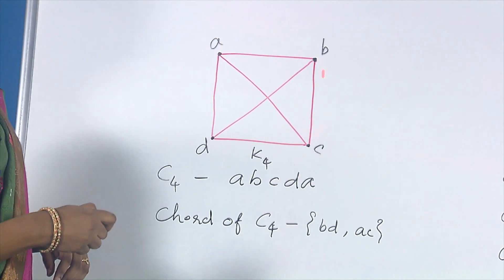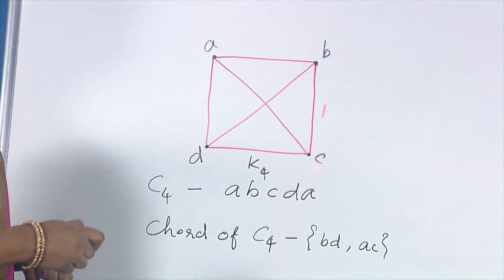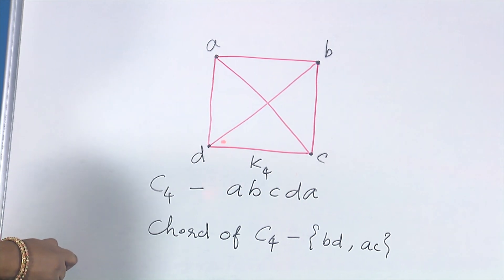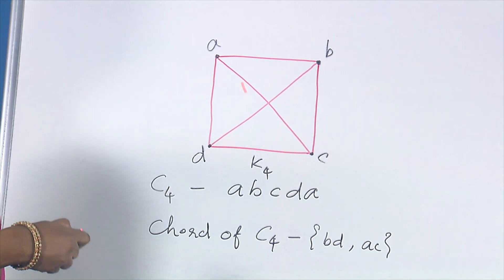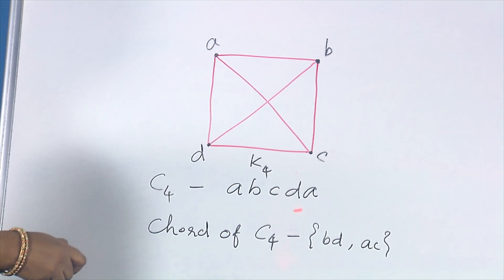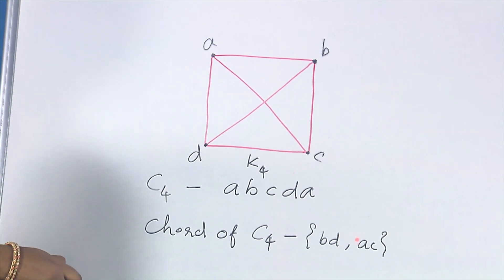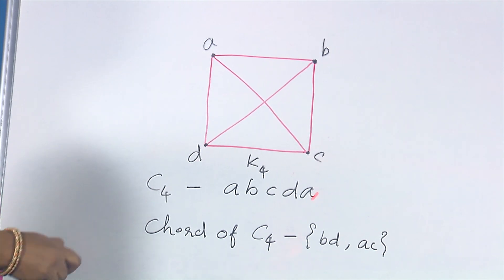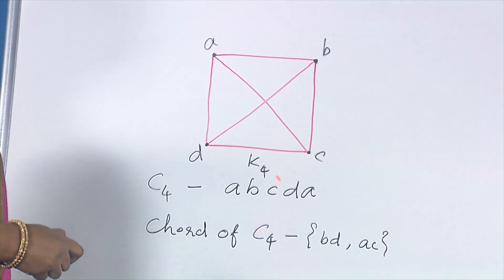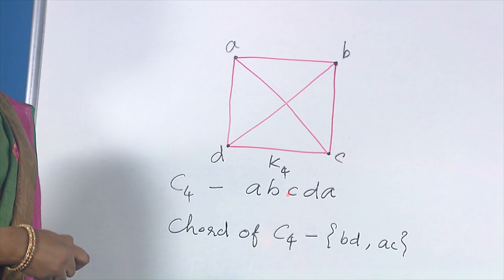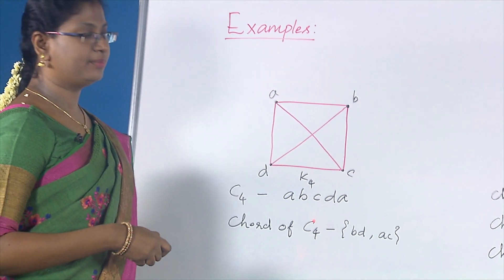The cycle A, B, C, D, A is a cycle of length 4 and here we have two chords, namely B–D and A–C. The chord of this cycle A, B, C, D, A is B–D and A–C. So this cycle of length 4 has two chords, which means K4 is a chordal graph — and indeed every complete graph is a chordal graph. This is one such example.